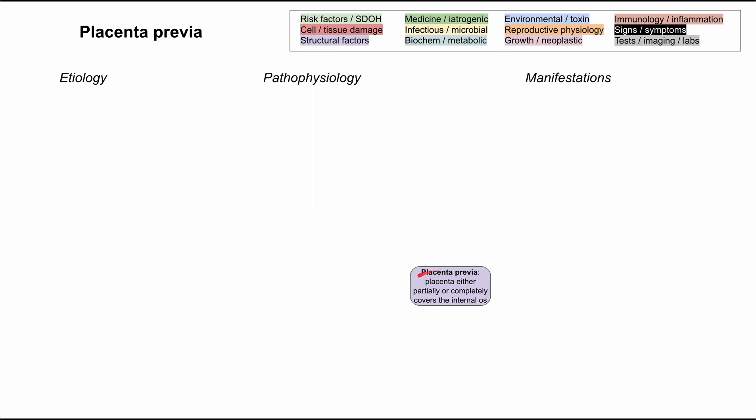Placenta previa can be defined as when the placenta is either partially or completely covering the internal os of the uterus, and this usually happens when you have endometrial damage close to the os in the lower uterine segment.